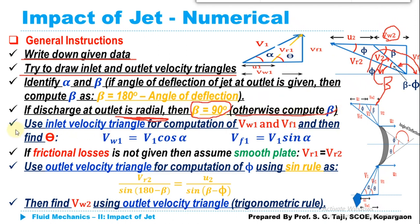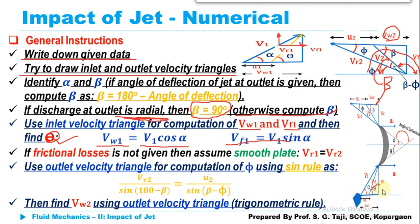Use the inlet velocity triangle for computation of Vw1 and Vf1, and then compute theta if asked to calculate the inlet vane angle. For theta: Vw1 = V1·cos(α) (horizontal component) and Vf1 = V1·sin(α) (vertical component). Once you compute Vw1 and Vf1 by trigonometrical rules, you can simply compute theta.